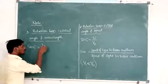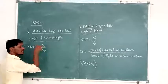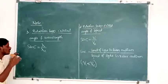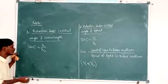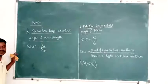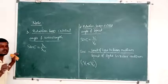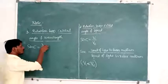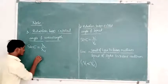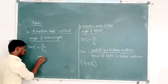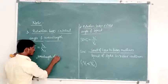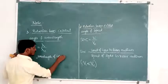What is λ1? Lambda 1 is the wavelength of light in the denser medium — it is the minimum wavelength. The wavelength is minimum in the denser medium. Lambda 2 is the wavelength of light in the rarer medium — the wavelength is maximum in the rarer medium.